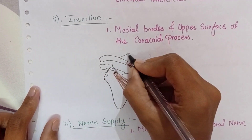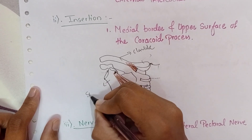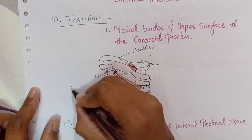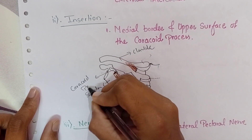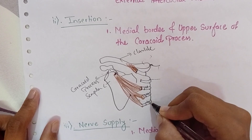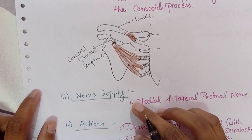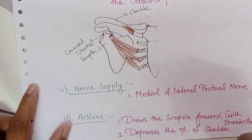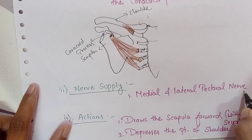We can name it as the clavicle; here it is the scapula, where this is the coracoid process. We have named the third, fourth, and fifth ribs. The nerve supply of this muscle is the same as that of the pectoralis major muscle, that is, the medial and the lateral pectoral nerve.